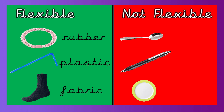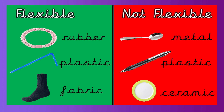The ones we found not flexible were metal, plastic, and ceramic. Have you noticed something? Sometimes a material can have different qualities — it just depends how it's been made. So plastic, if it's thin, can be made flexible. If the plastic's been made thicker, it means it's nice and firm and hard, so it's not flexible.